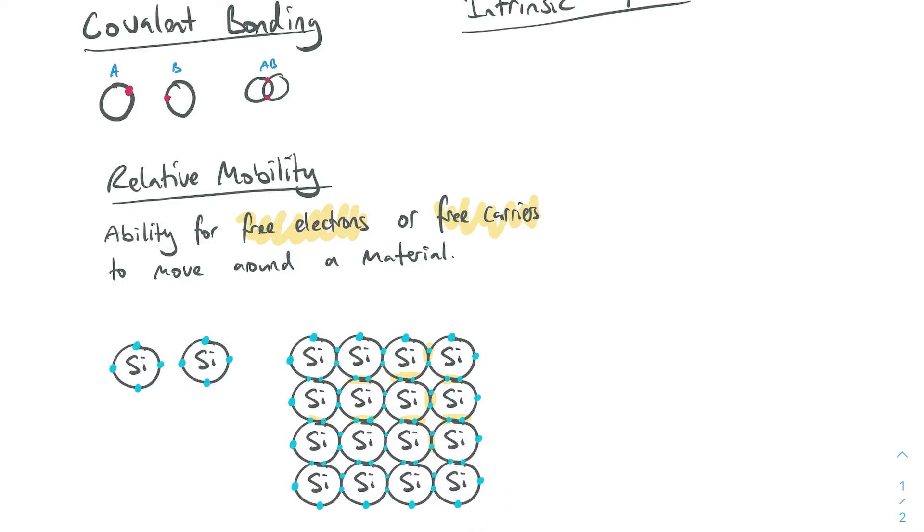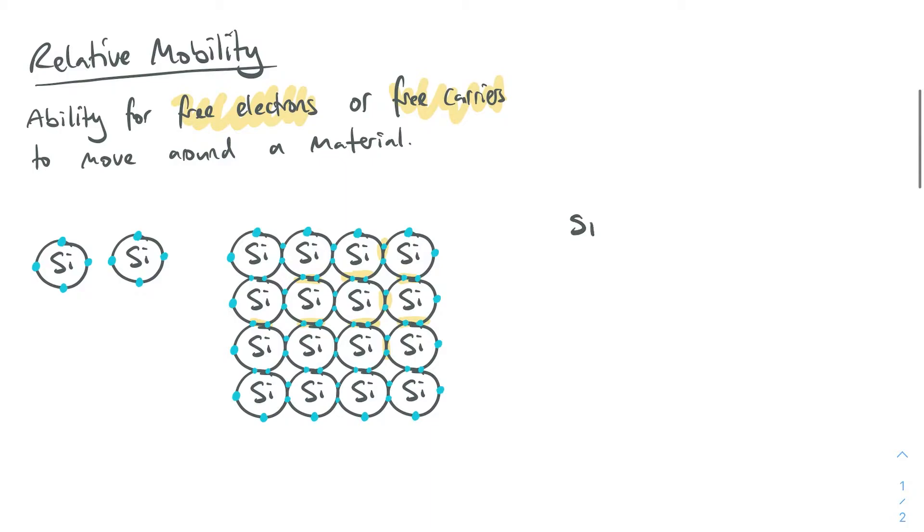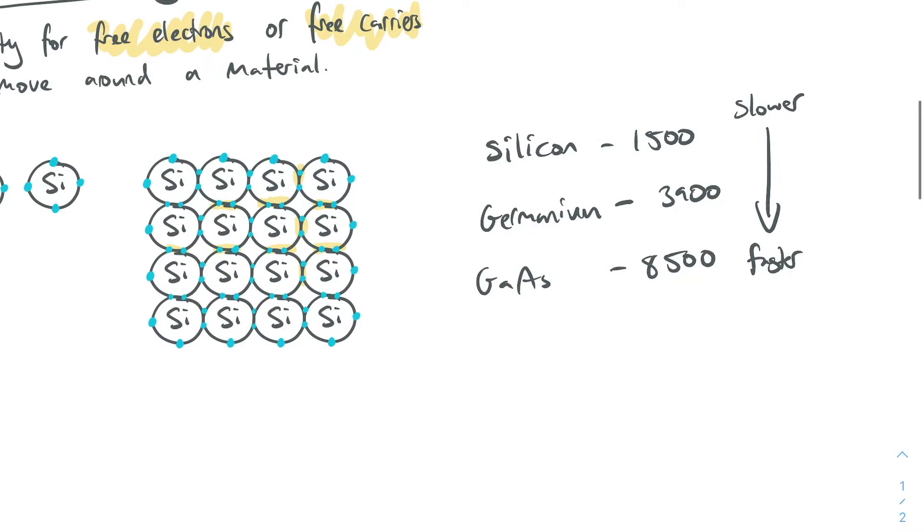But let's just quickly touch on what are the relative mobilities of each of the various different materials that we use. So silicon, which is the most popular, has a relative mobility factor of 1,500. Germanium has a relative mobility factor of 3,900. And gallium arsenide has a relative mobility factor of 8,500. So don't worry too much about the units, but the key thing to know is that 1,500 is slower and 8,500 is faster. What this then relates to is the response time of devices that are made using those materials. So just keep in mind really here, gallium arsenide is the fastest.